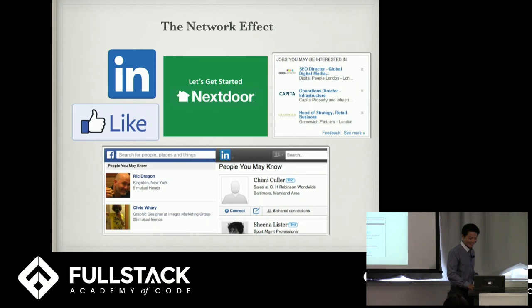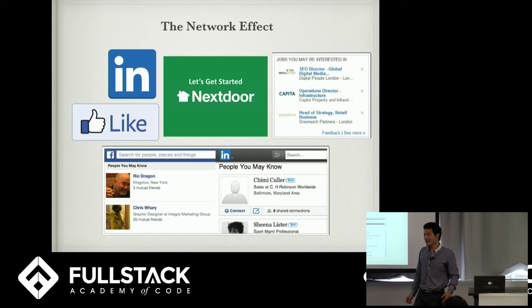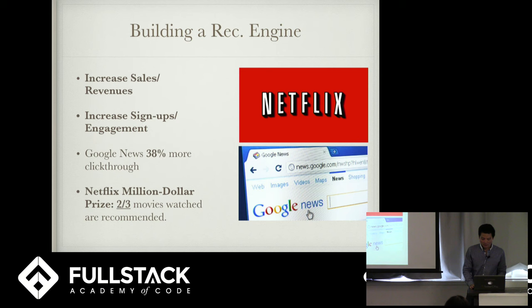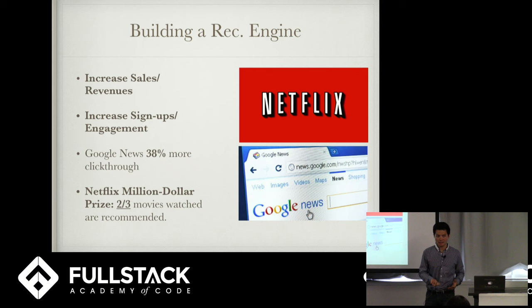The network effect: Nextdoor.com is a way for you to talk to your neighbors and learn about recommendations and events in your neighborhood. Facebook and LinkedIn very famously use a graph algorithm to suggest people you know, jobs you might be interested in, or things you like. You build a rec engine to increase sales and revenues, as in the case of Amazon and Gilt, or to increase user engagement and signups, like Nextdoor, LinkedIn, and Facebook.